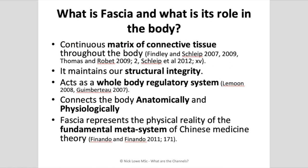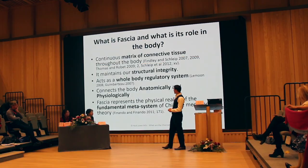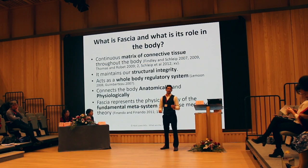Fascia may be the anatomical substrate that can unite all these channels into one system. Fascia is a matrix of connective tissue that runs throughout our body, connecting us from head to toe. Originally we thought it was responsible mainly for maintaining structural integrity and posture. But further research revealed that it acts as a whole-body regulatory system in its own right, functioning somewhat like the nervous system — regulating communication between the nervous system, blood vessels, circulatory system, endocrine system, and immune system through one webbing of connective tissue.